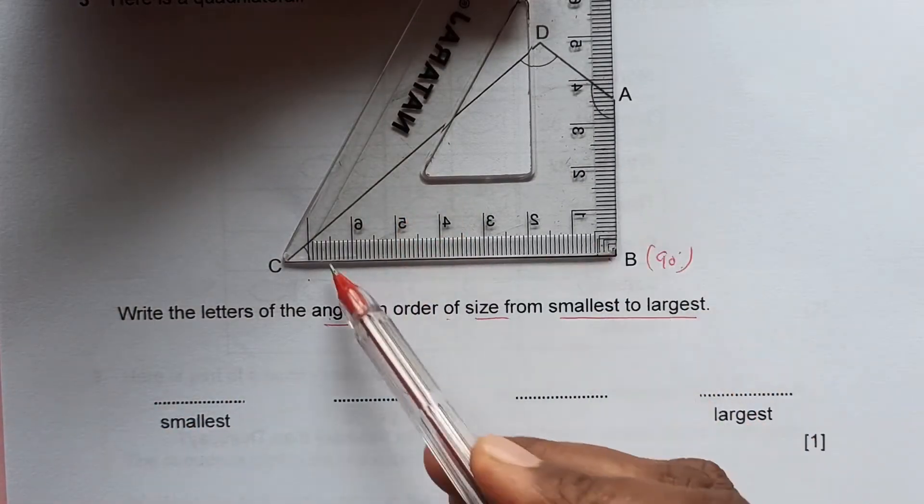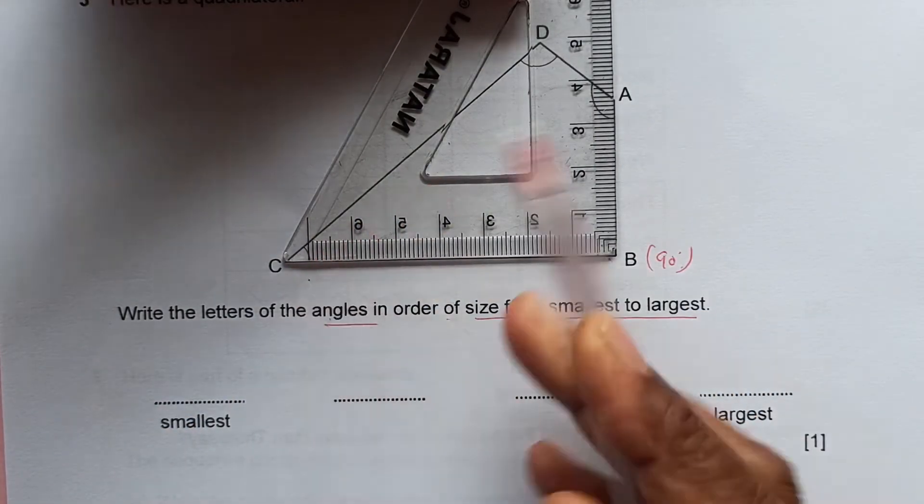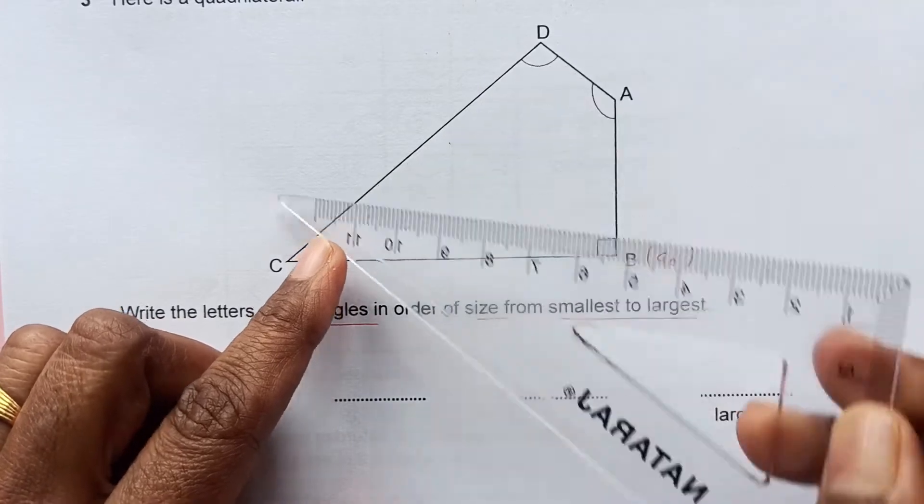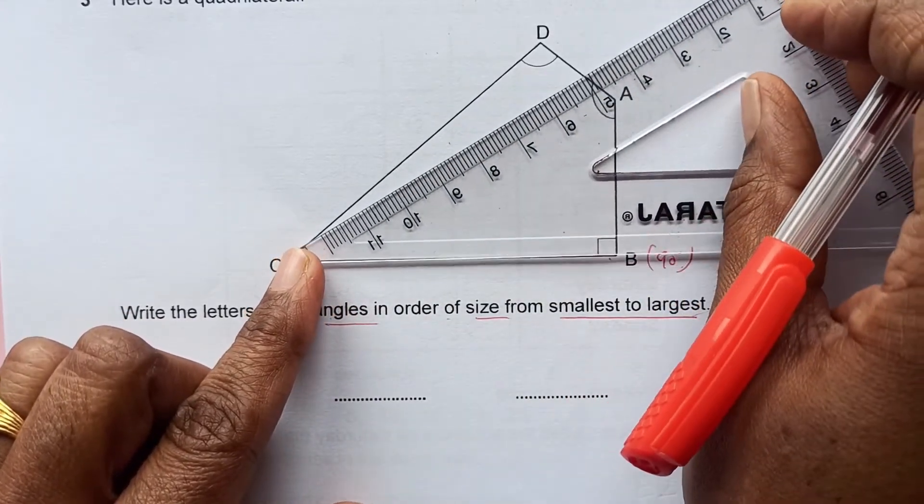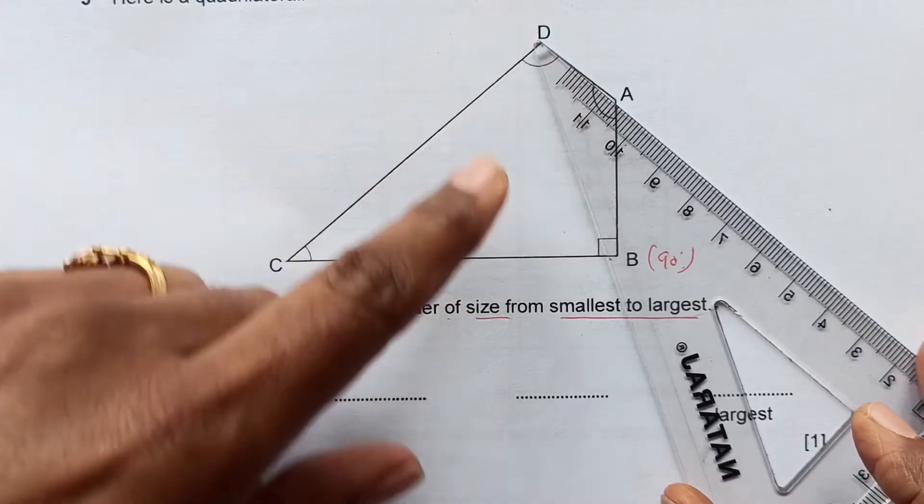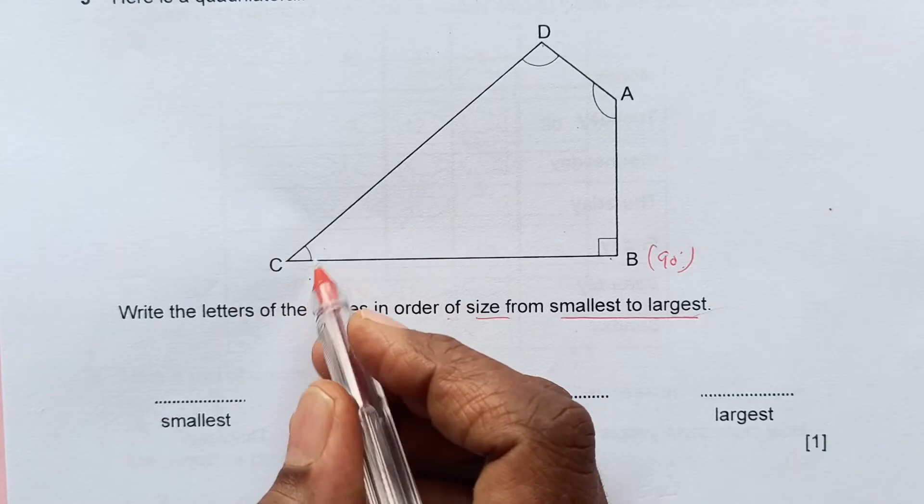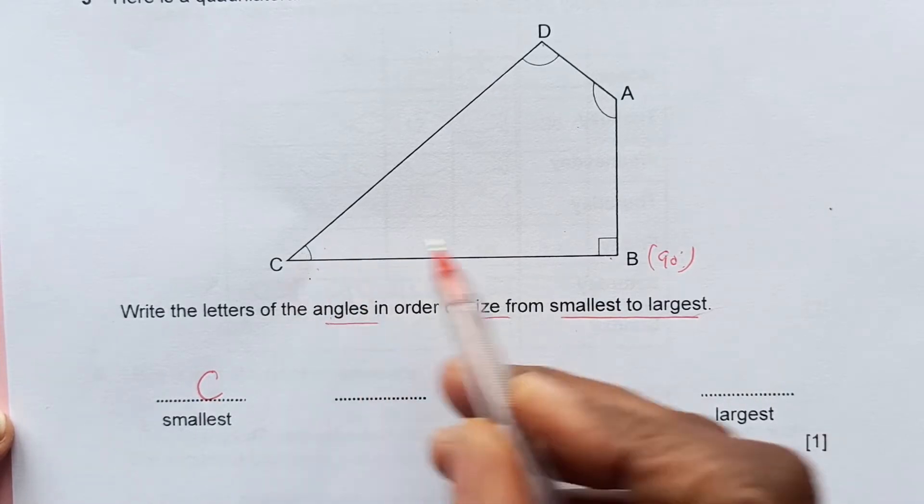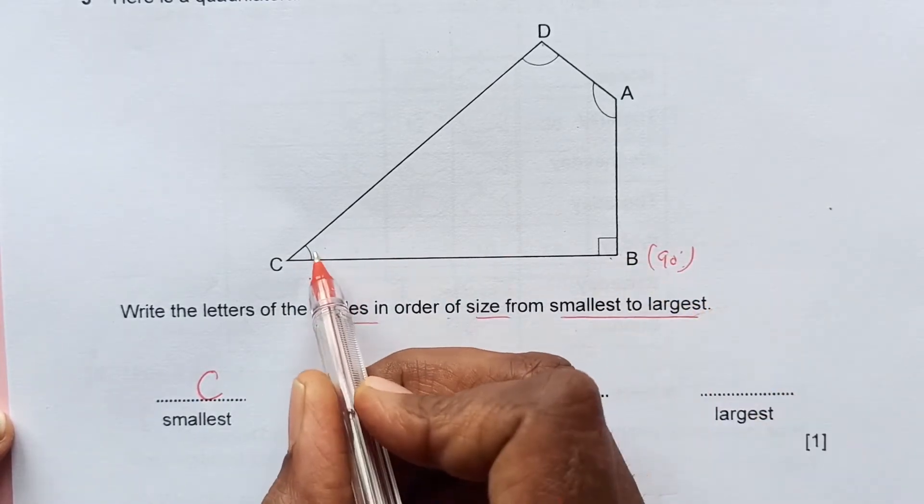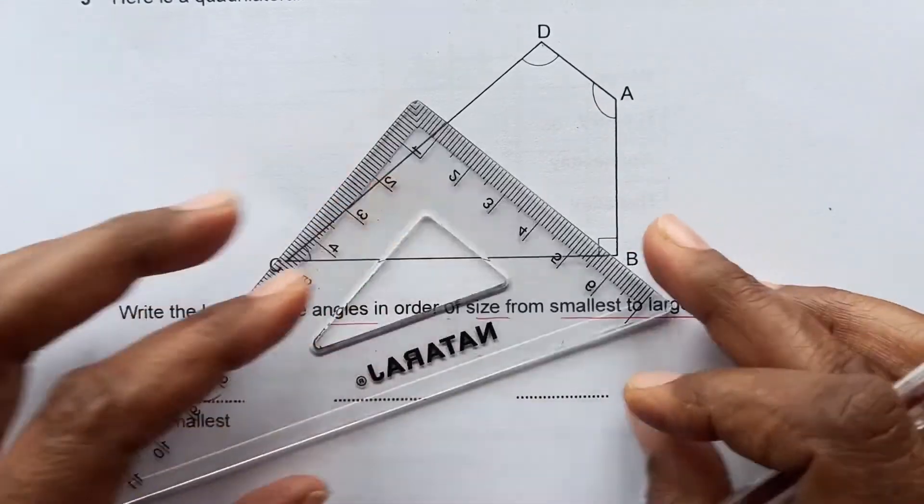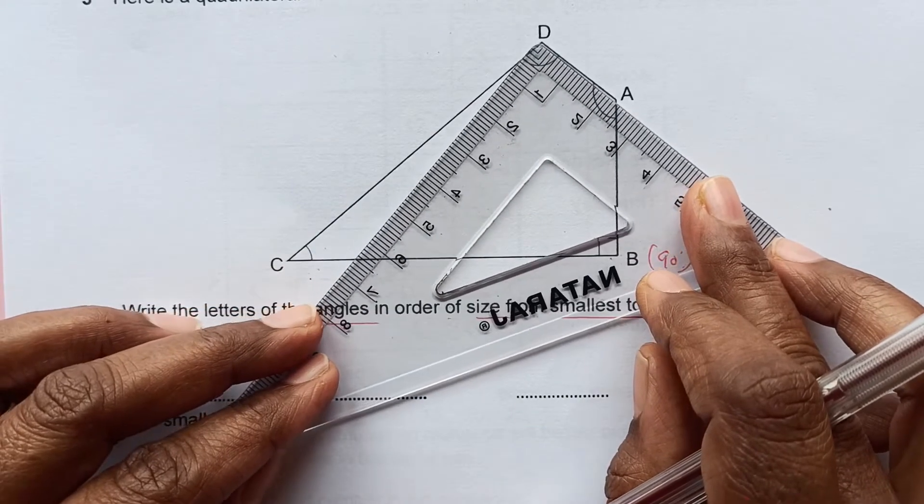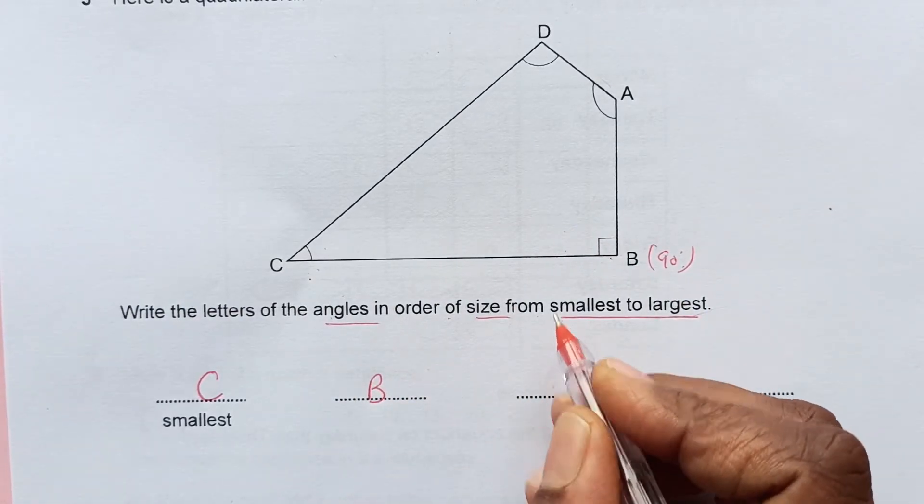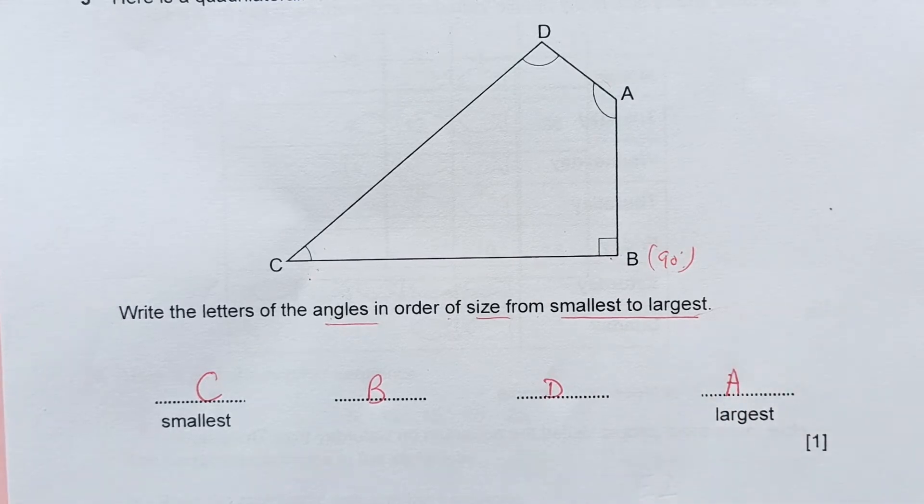I will use this tool here. You see this is 90 and this angle is going in the middle. If you see, this angle is greater than that one. And this one is bigger than this one. The smallest angle we can see is acute angle, which is C. After that is 90. This is less than 90, this is bit greater than 90. If we put this on 90, this is greater than 90. So then we have B, then D, and A is the largest angle.